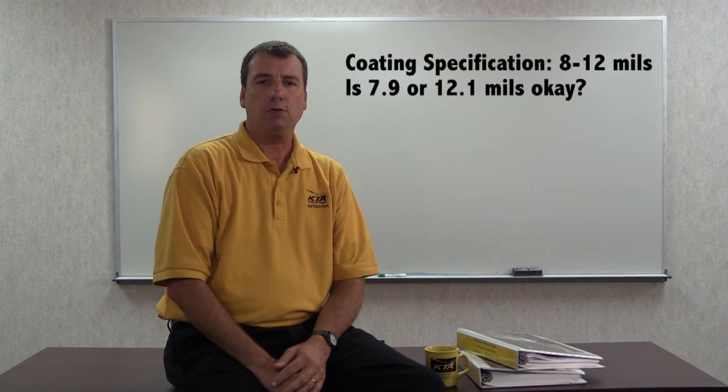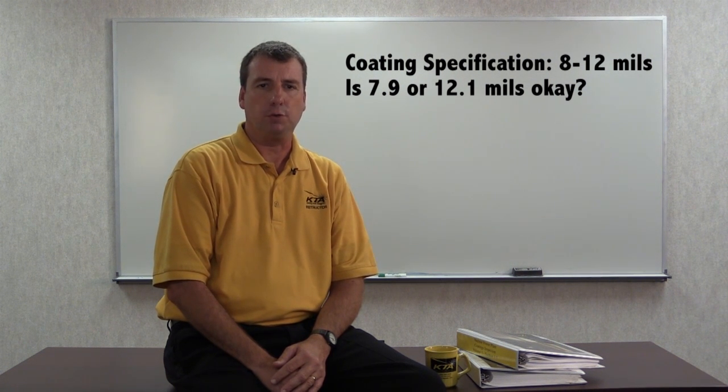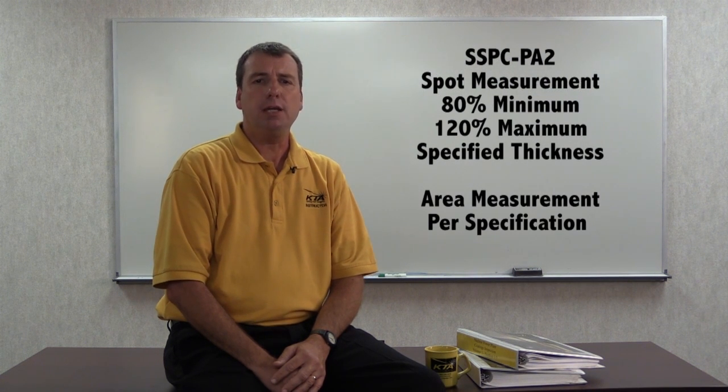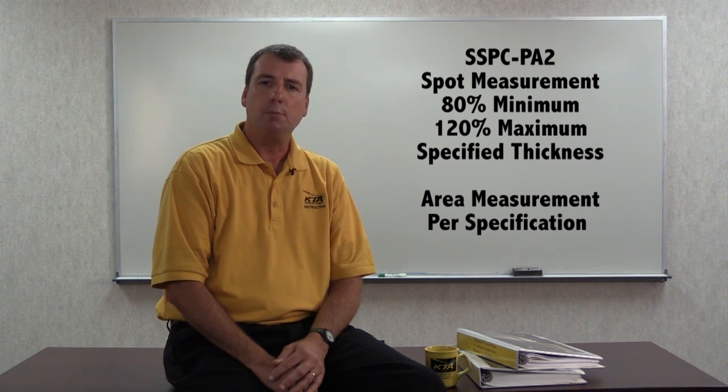But how do you determine the specific thickness range that must be adhered to? For example, if a specification requires 8 to 12 mils, are spot measurements of 7.9 and 12.1 mils rejected, or is there some leeway? Many users are familiar with the SSPCPA2 guidance that 80% of the minimum and 120% of the maximum are acceptable, provided the total area being measured is within the specification limits.